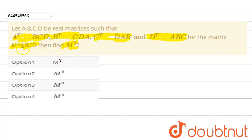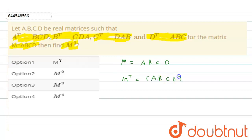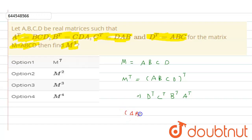We have to find M cube, and we are given that M equals ABCD. Taking the transpose of M, we can write M transpose equals (ABCD) transpose, which equals D transpose, C transpose, B transpose, A transpose — using the property that (AB) transpose equals B transpose A transpose.